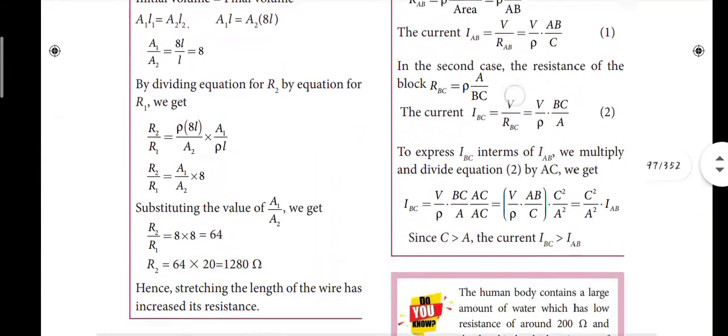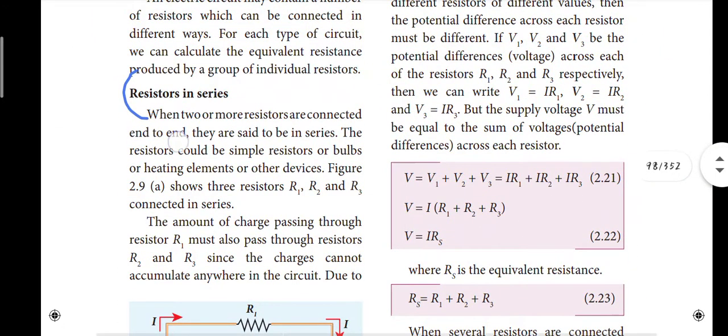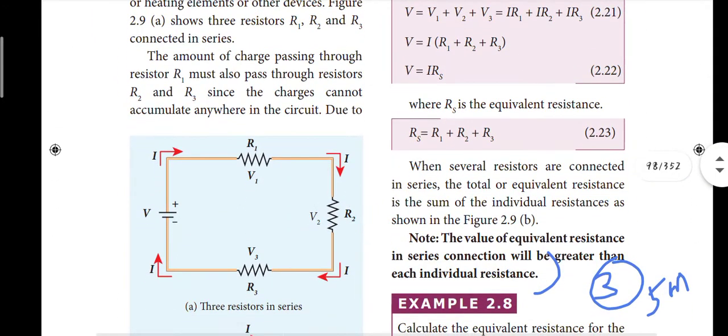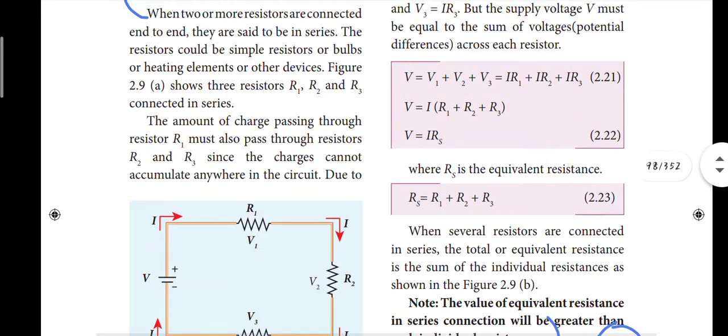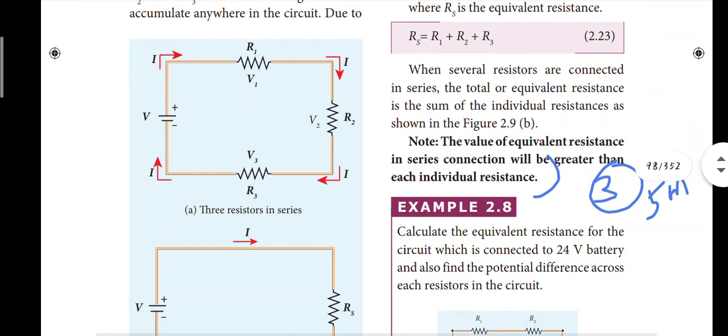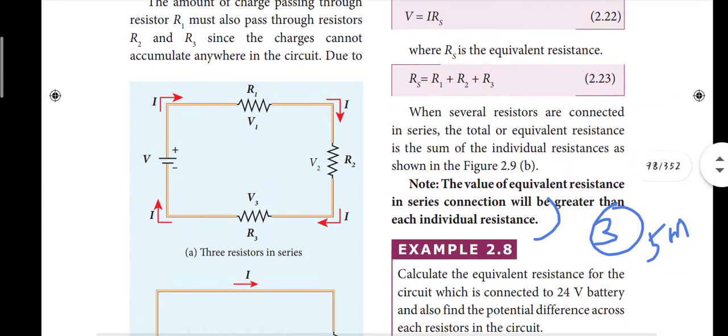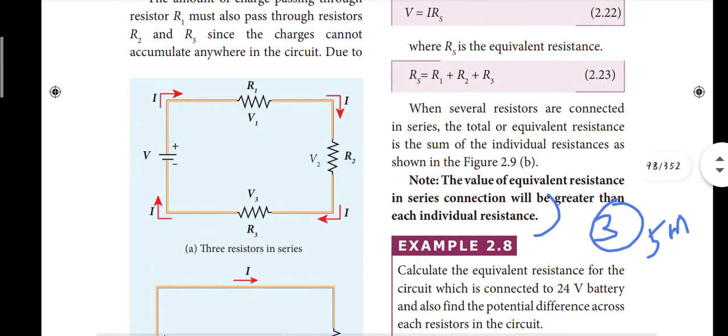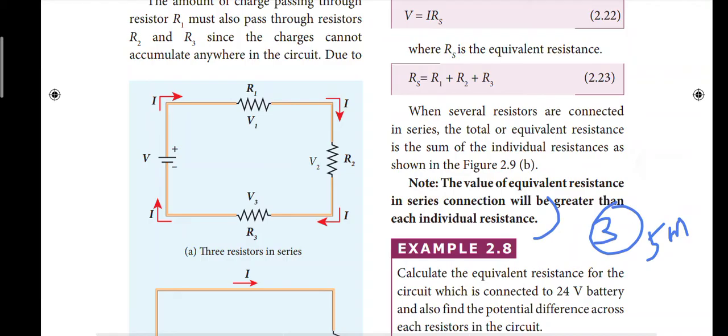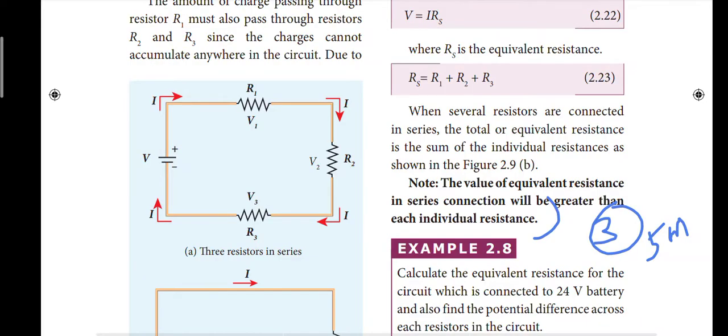Next, third question: resistors in series and parallel. Resistors in series - we have the diagram, we have the theory, that's the equation. If we have this note, we will get marks. We have the statement: several resistors are connected in series, total or equivalent resistance is the sum of the individual resistances. So R total equals R1 plus R2 plus R3. The individual resistances are added.